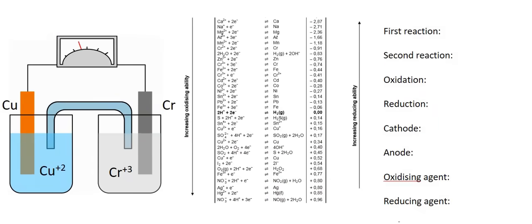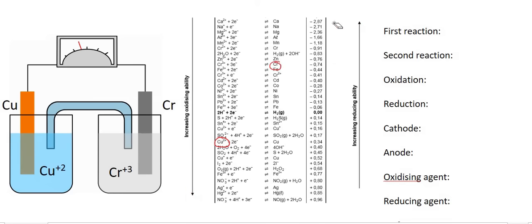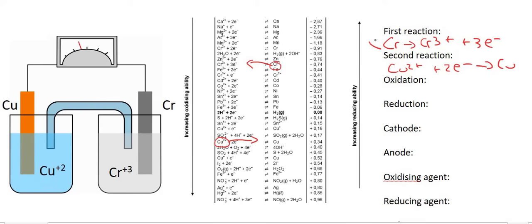So here we have chromium and we've got copper. What we do is go find them on the table. I find chromium over here, and Cu2+ is this one over here. I then look for the one that's highest up on the right-hand side, which is chromium. I then look for the one that's lowest down on the left-hand side, which would be Cu2+. Now the reactions are simply going to go in that direction — so chromium goes this way and copper goes from left to right. The oxidation one is chromium because Cr is losing electrons — Cr becomes Cr3+ plus 3 electrons.